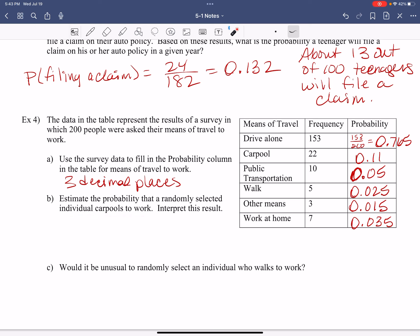Yup. 0.11. Where's my pencil? So 0.11 is what we can expect for that. So if we're going to say, out of 100 people, how many do we expect? How many to carpool?